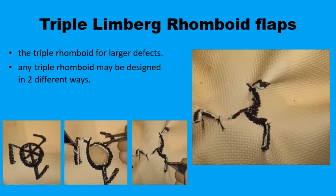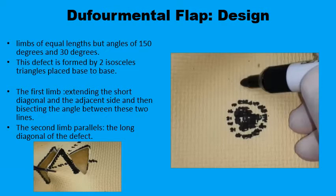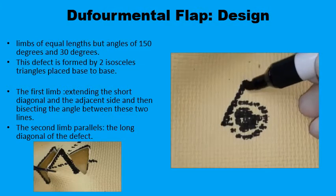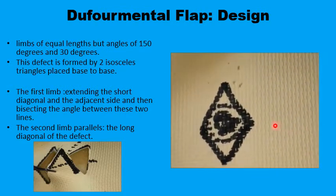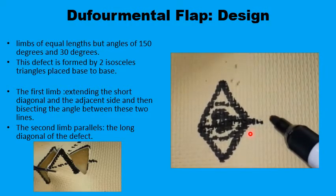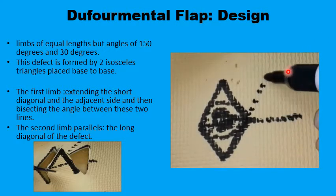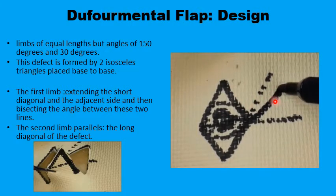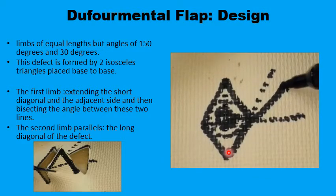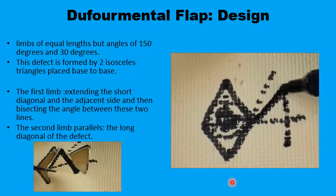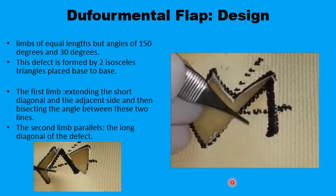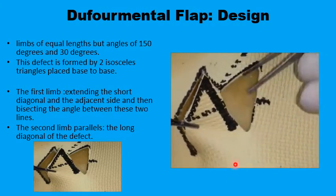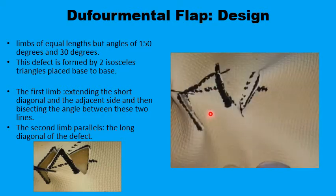With the deferential flap, you can work with rhomboids with angles different from the classic 60 and 120 degrees — for example, 30 and 150 degrees. You extend the short diagonal to the outside, draw a line, extend one of the sides of the rhomboid, draw another line, and bisect the angle to get the first limb. Then drop from there a line parallel to the long diagonal of the rhomboid — that is the deferential flap. After excising the lesion, the flap is transposed into the primary defect. The secondary defect is easier to close because the angle is narrower, with less dog ear deformity.